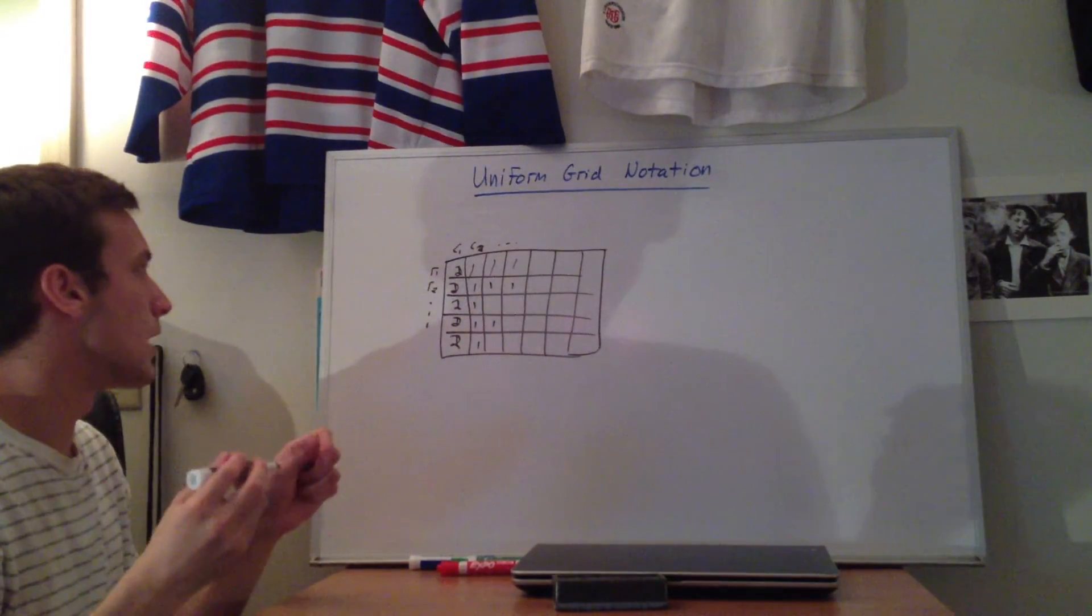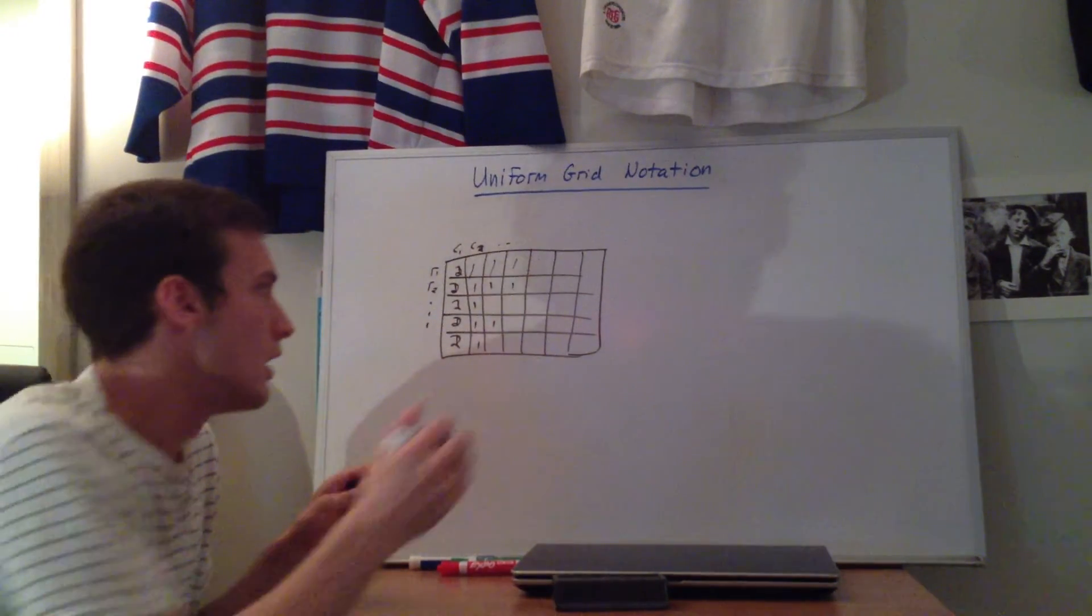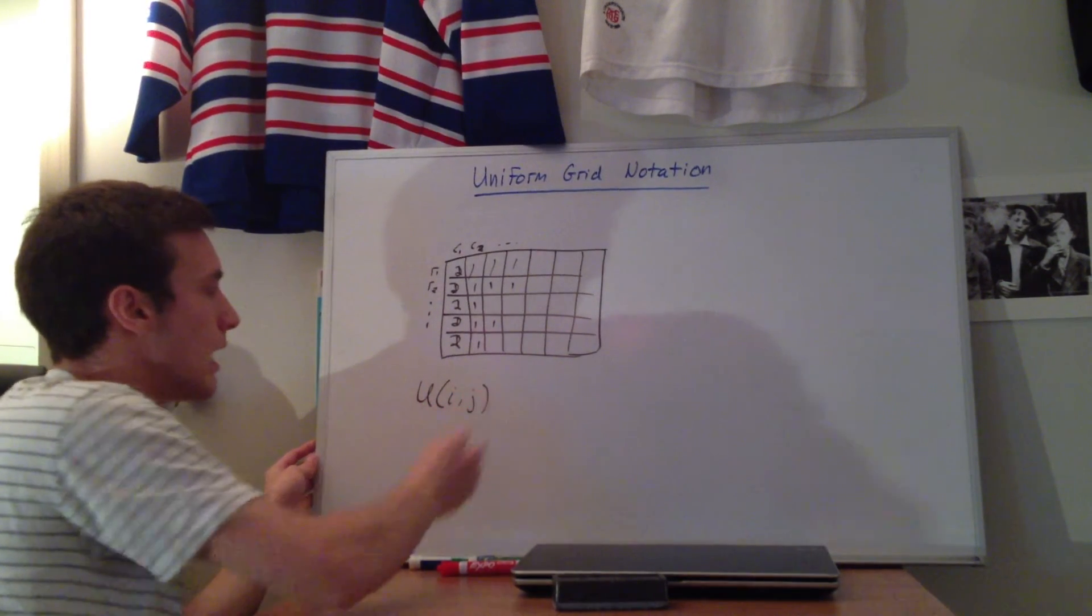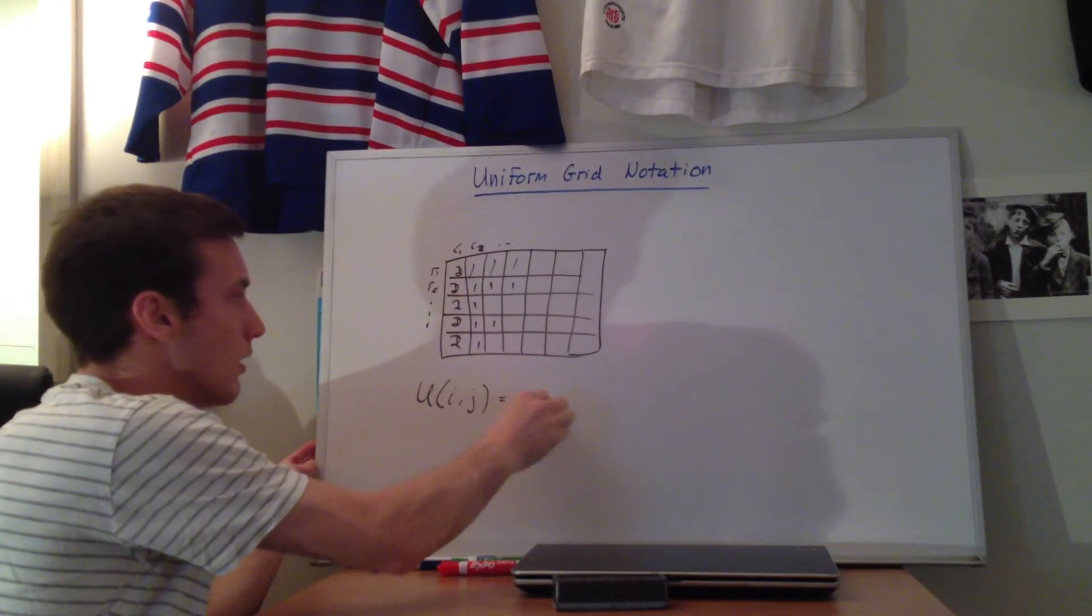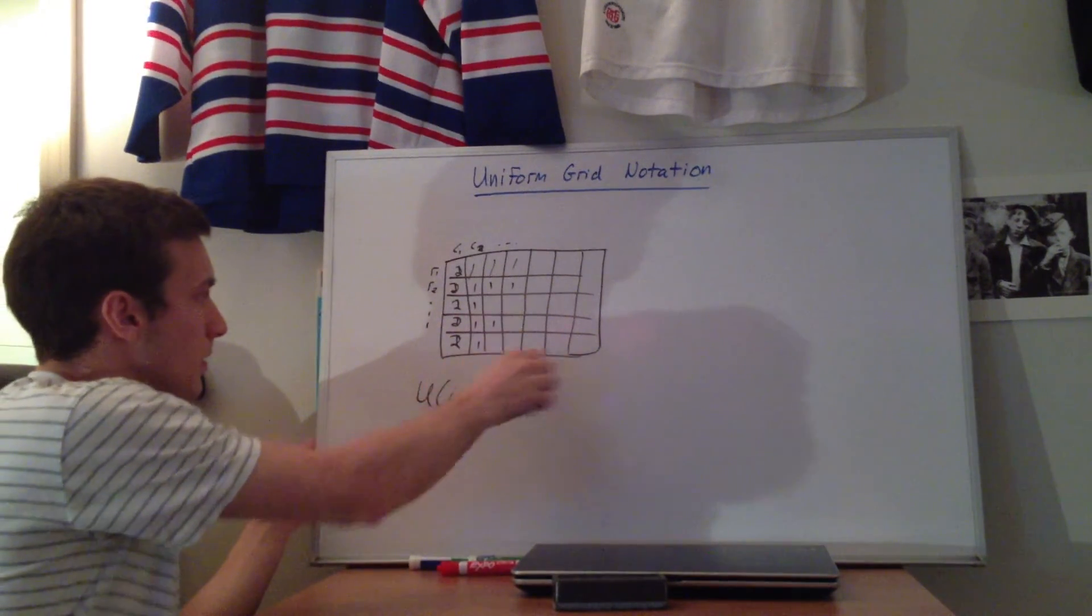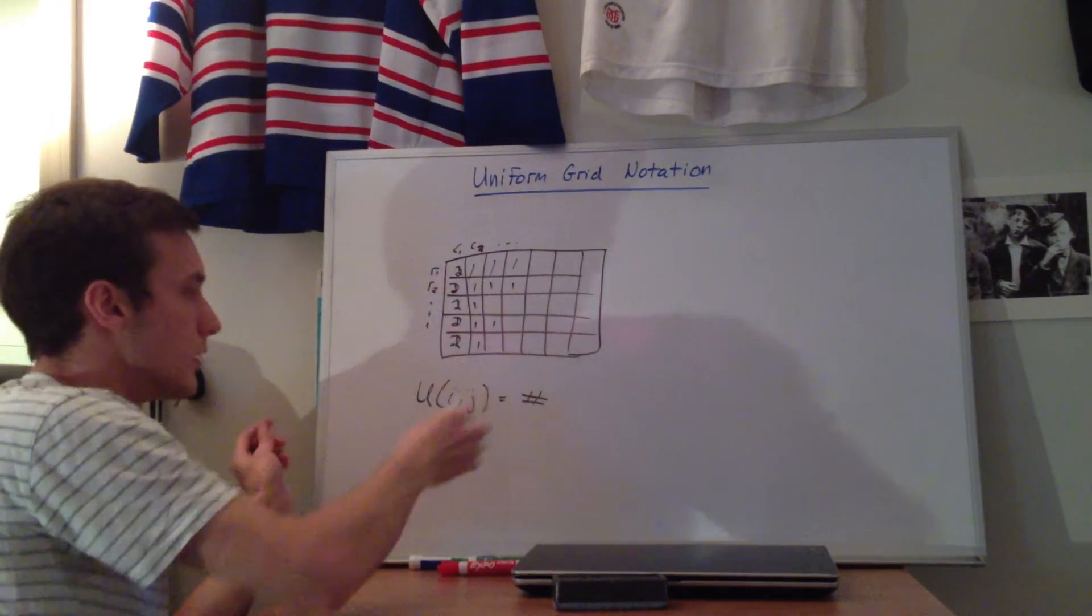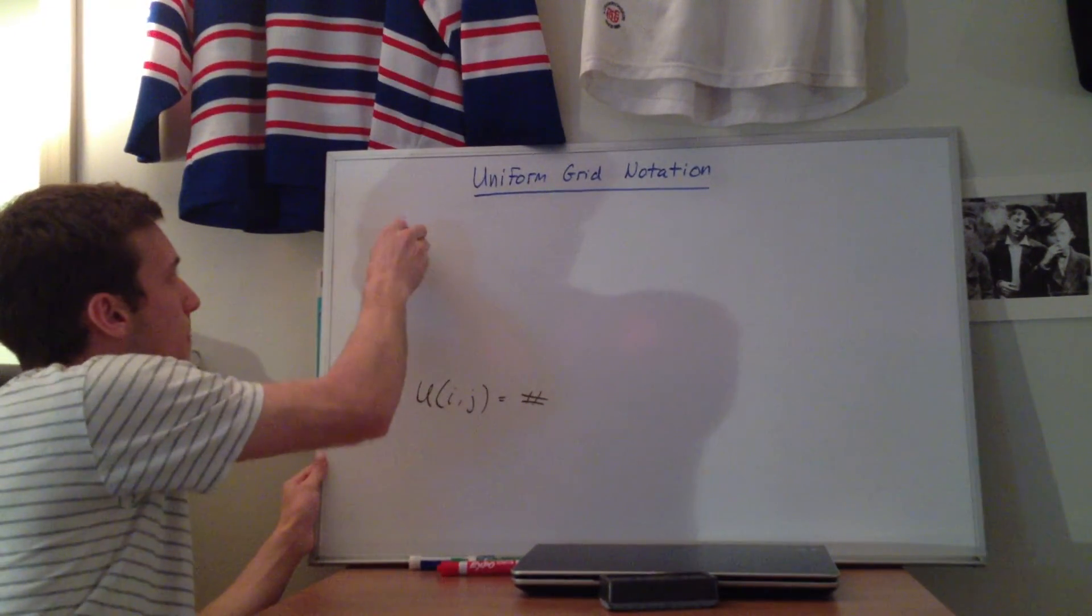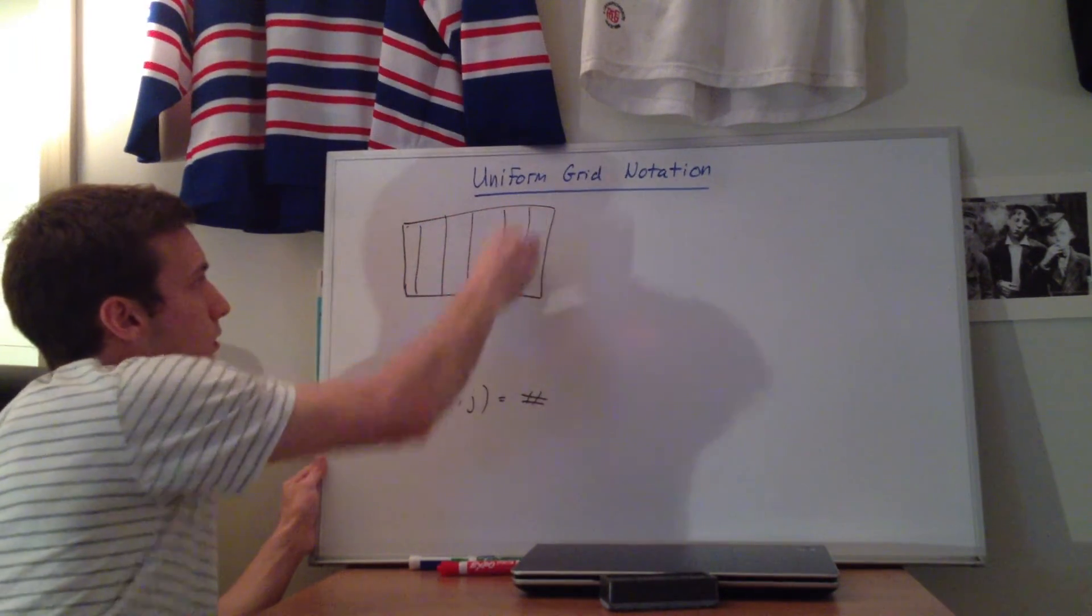So the problem that you run into is that, if you're using the ij notation that I described earlier, you would be setting u, you have uij is equal to some number. So when you set uij equal to some number, you'll say, okay, I want to set all of these columns here. So ignore this for one second. Sorry if I went a little ahead of myself. Here's our domain that I drew before, crudely.